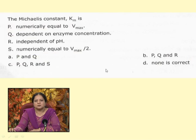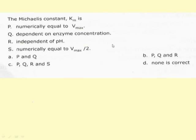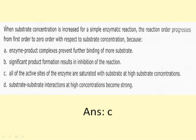For a simple question regarding the Michaelis-Menten constant Km: the options are that Km is numerically equal to Vmax; dependent on enzyme concentration; independent of pH; or numerically equal to Vmax/2. Scrutinizing each: Km is not numerically equal to Vmax, nor to Vmax/2. Km is dependent on pH and independent of enzyme concentration — it is Vmax that depends on enzyme concentration. Therefore, the answer is none of the above is correct.